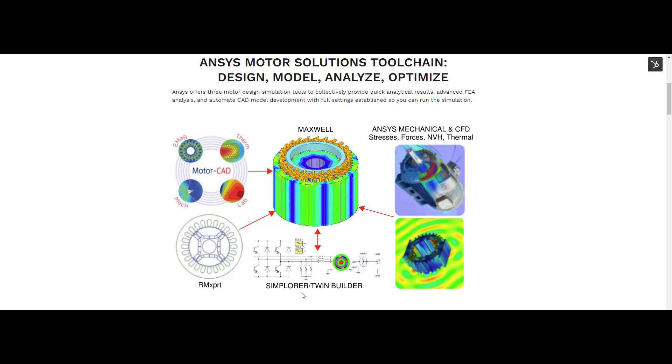Simcenter Twin Builder can be used for motor control analysis and it uses reduced order modeling, also known as ROM, to extract matrix impedances from Maxwell FEA results of the motor to create dynamically linked circuit block elements to use in the control circuits.